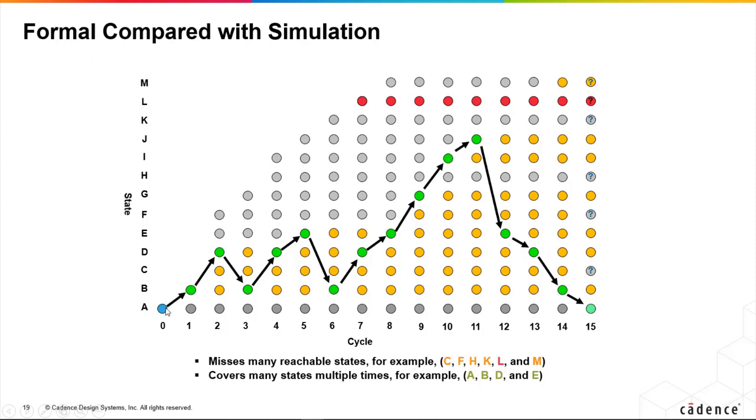Within simulation what you find is you start from here, you take a path through this state space and you're revisiting the same state. So for example, state B, we've visited it one, two, three, four times. We learn nothing new after the first time we've been there, we learn nothing new.